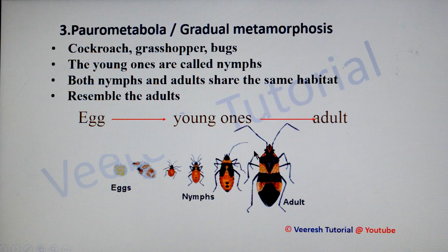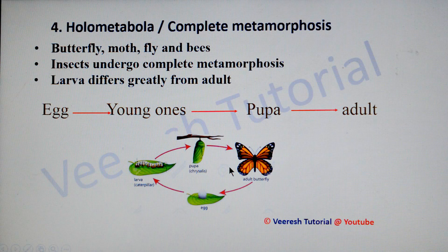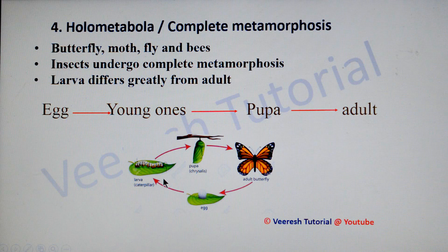The fourth one is holometabola, also called as complete metamorphosis, present in insects like butterflies, moths, flies, bees, and beetles. Here the insect undergoes complete metamorphosis and the larva differs greatly from the adult. These insects have four life stages: egg, larva, pupa, and adult. In this case, immature mouth parts and food habits differ from the adults.